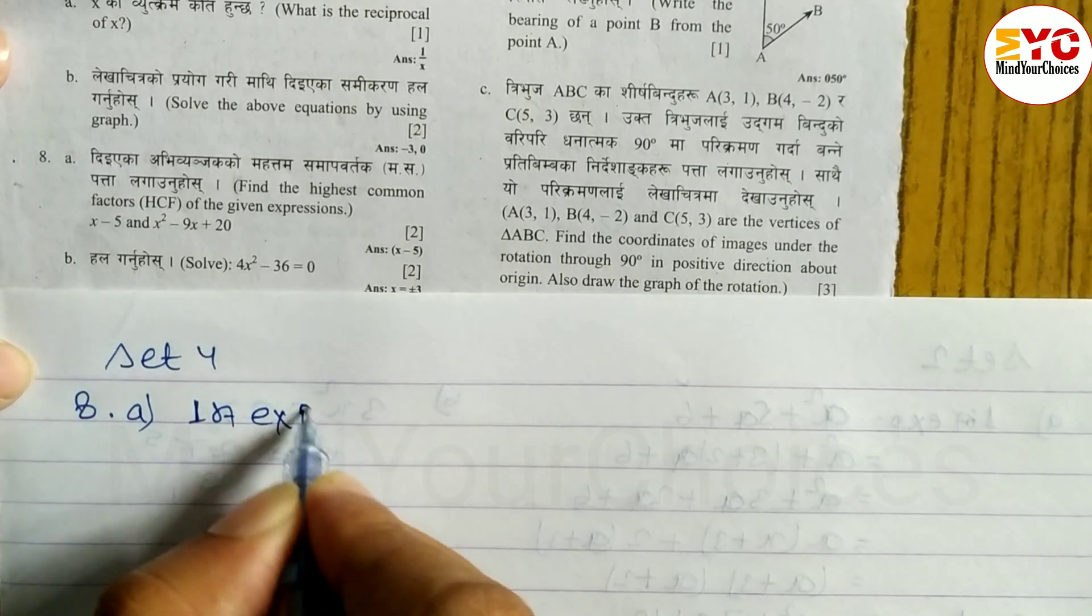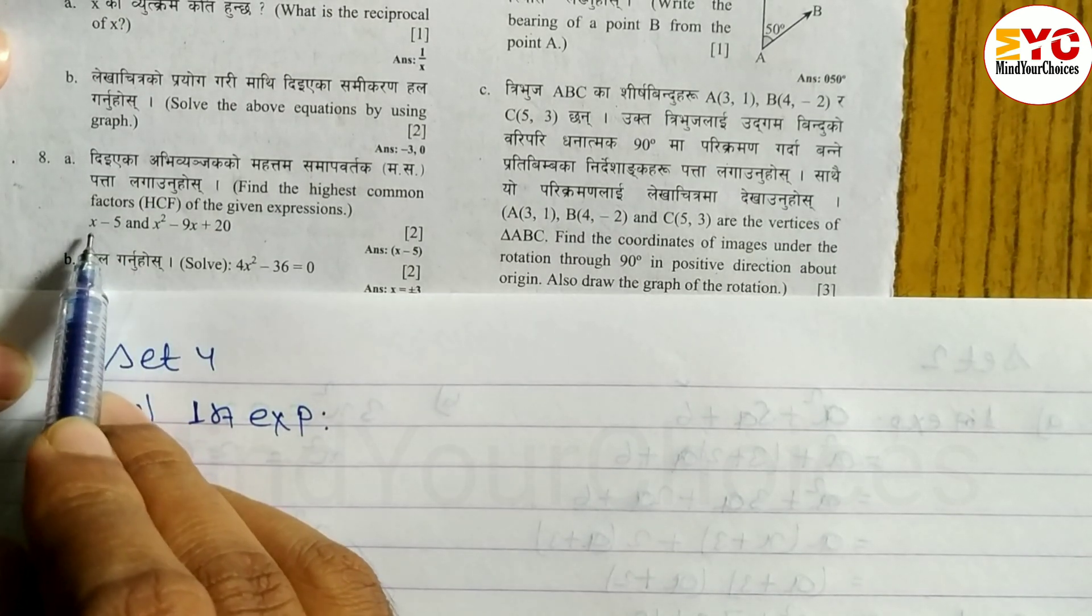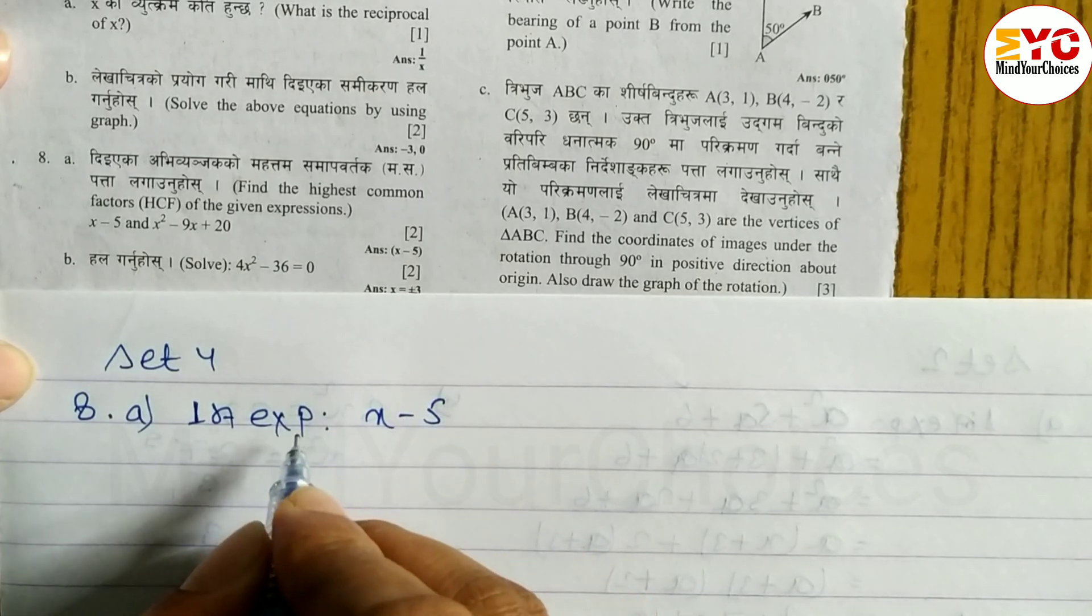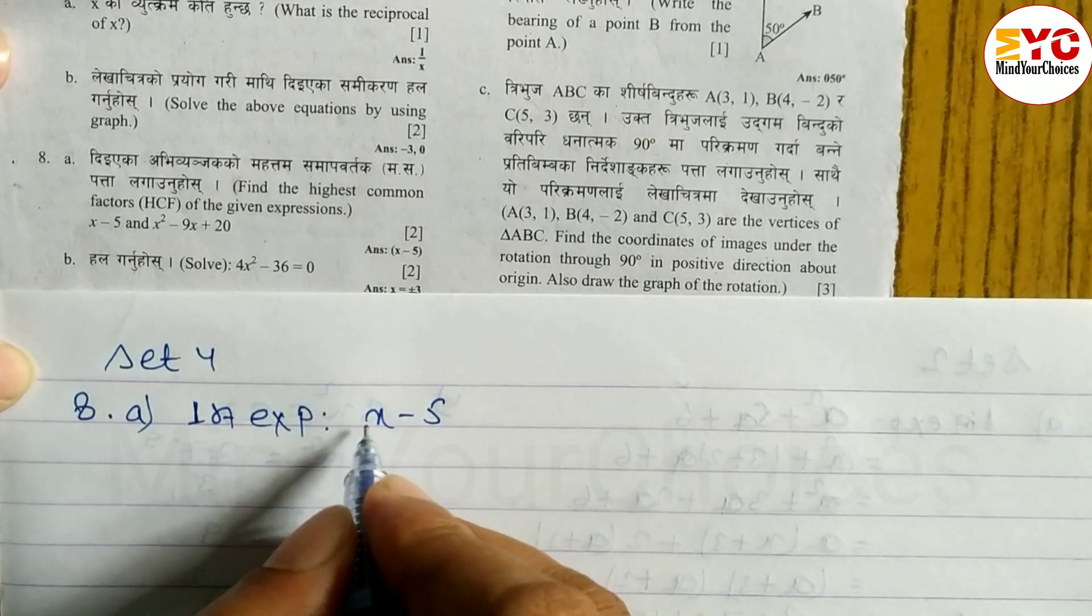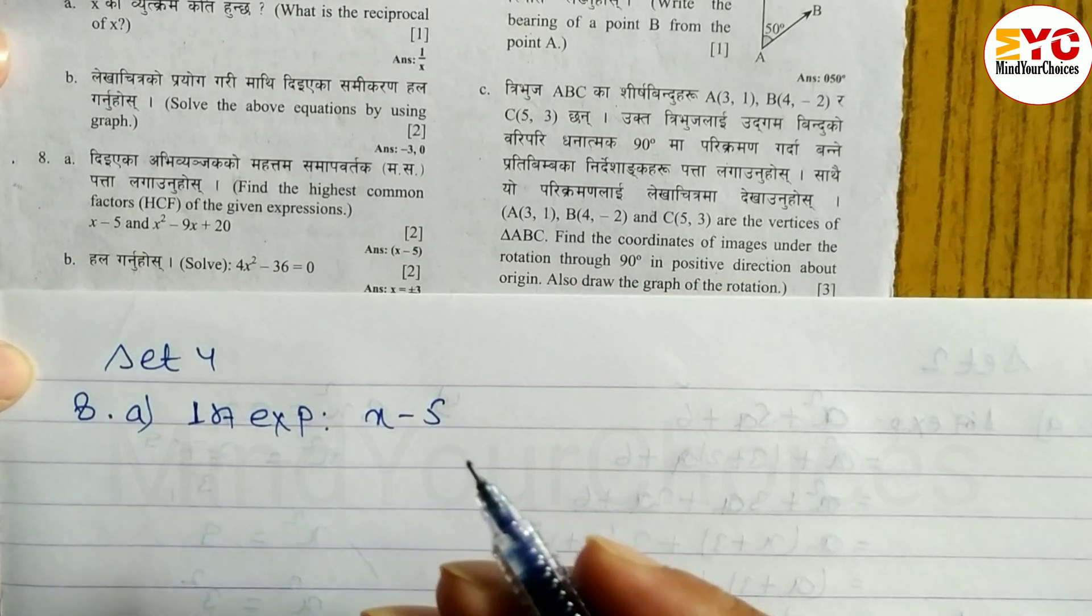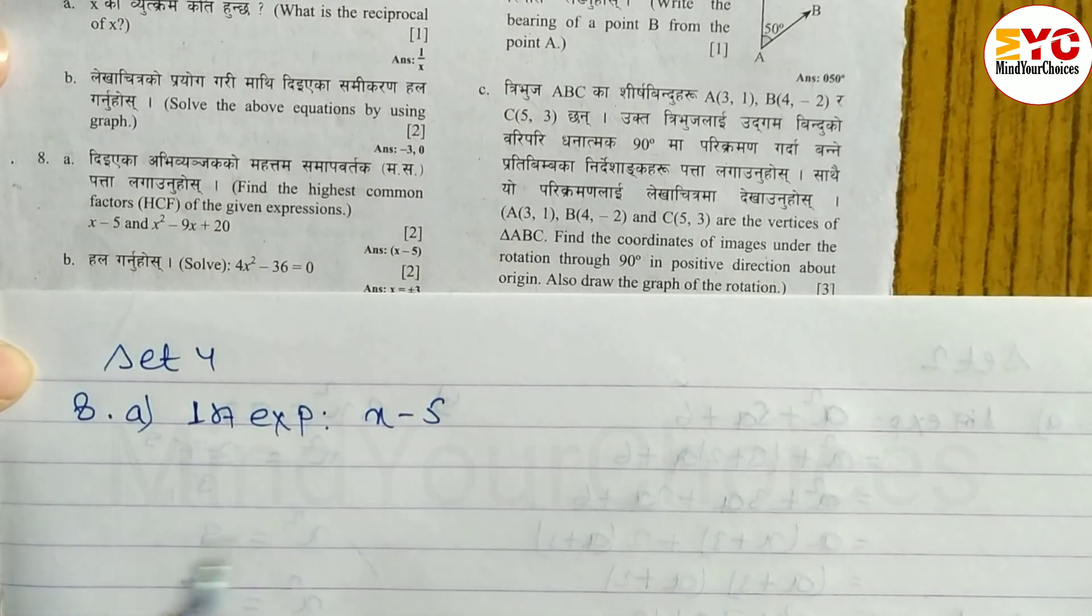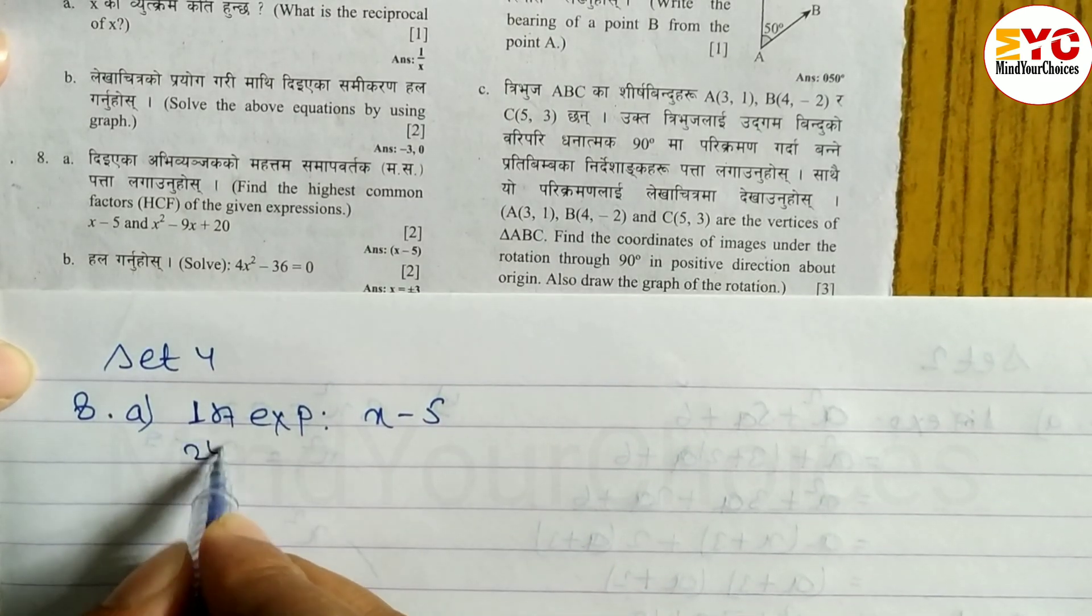So first expression, first expression what is it? x-5. Now x-5 cannot be factorized, we cannot take common, we cannot use any formula. So we'll just leave it as x-5. Second expression,